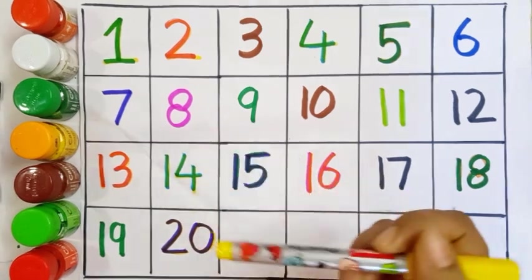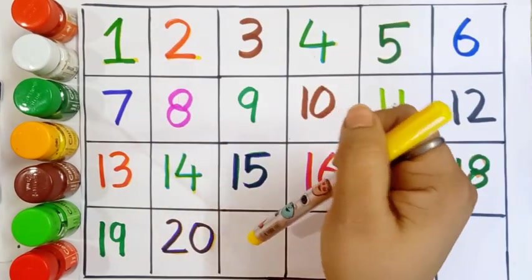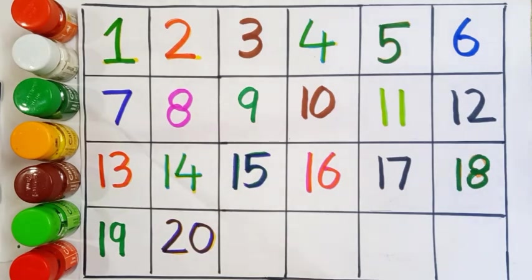तो बच्चों आज हमने करी काउंटिंग 1 to 20 और जाने कलर्स नेम। तो आप भी प्रैक्टिस करते रहिए। मिलते हैं।